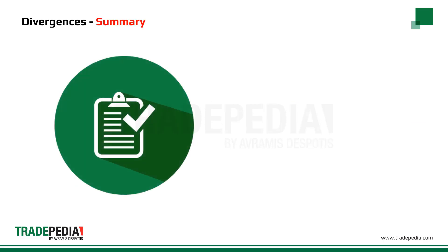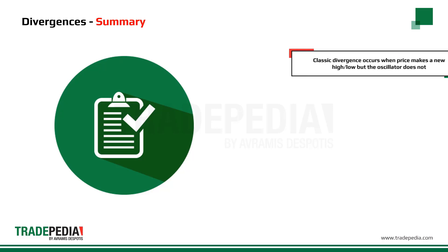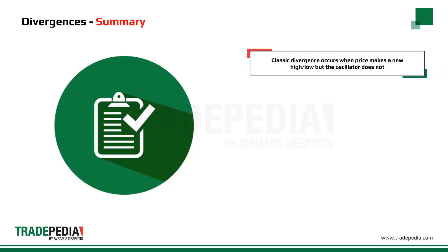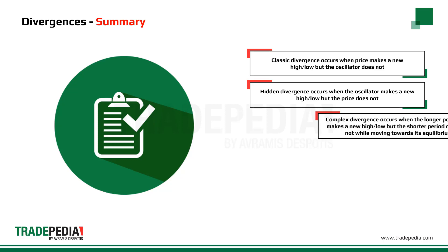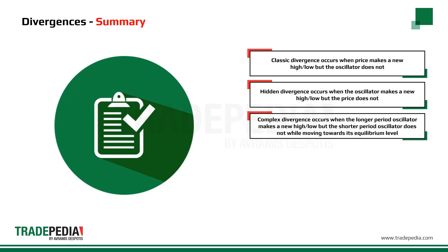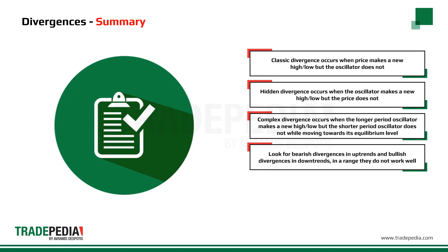Let's summarize the various types of divergences. Classic divergence occurs when price makes a new high or low, but the oscillator does not. Hidden divergence occurs when the oscillator makes a new high or low, but the price does not, while moving towards its equilibrium level. Look for bearish divergences in an uptrend and bullish divergences in a downtrend, and be advised that divergences do not work well in a range.